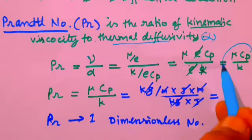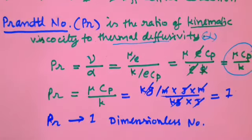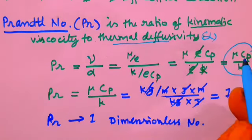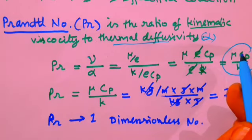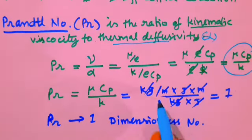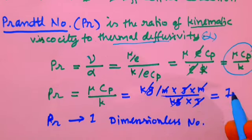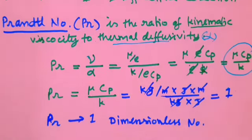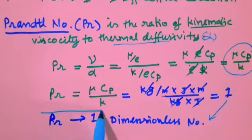By simplifying this equation we get mu cp upon k. Now placing the dimensions of mu, cp, and k, we get the final unit of 1, indicating that this is a dimensionless number. So the Prandtl number is a dimensionless number.